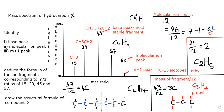Just remember: the tallest peak is the base peak. The one to the far right is the molecular ion peak. And if you have a small peak right next to the molecular ion, that is your M+1 peak. Now I'm going to do one that is not a hydrocarbon.